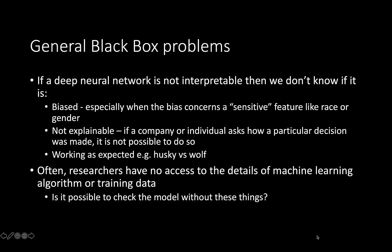There's a general black box problem: if a deep neural network is not interpretable — meaning we don't know how it works — then we don't know if it's biased. This is a special concern when bias involves sensitive features like race or gender in image recognition. It's also not explainable, so if a company or individual asks how a particular decision was made, it's not possible to answer. This matters greatly for decisions like whether people get interviewed based on ML assessments of CVs, or bail and sentencing decisions.